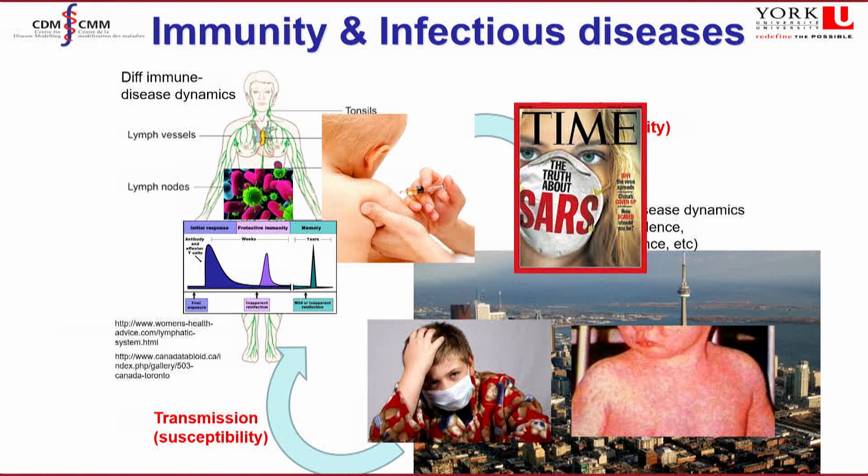We also do this for vaccination. When translating susceptibility and transmissibility from the immune response to the population level, we need to consider how individuals behave and make decisions. So we incorporate game theory and behavior into our models to determine when people are more likely to mask or get vaccinated, and what the trade-offs and costs are for different people of different genders, sexes, ethnicities, vocations, and where they work and live.